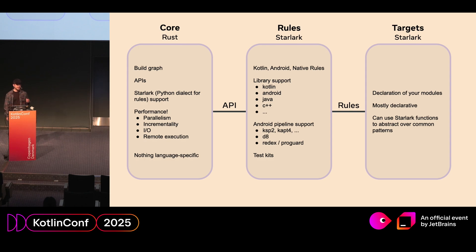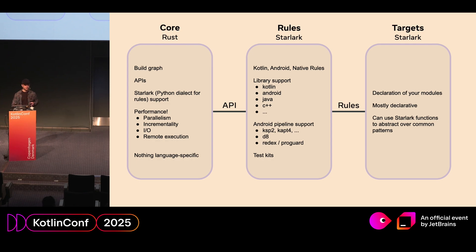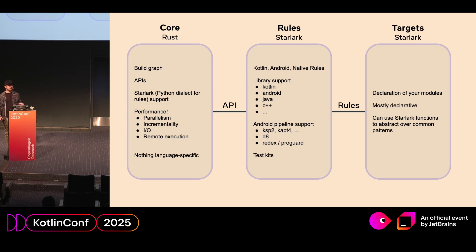Then there is the rule layer. The rule layer is where we define how we build things in the ecosystem — toolchains and things like that. This is where compilers are integrated and where we define how we interact with KAPT, KSP, any bytecode optimizers like R8, ProGuard, Redex, dexers, and bytecode translation. In the rule layer you can be as creative as you want, delivering your rules to everyone in the company or a subset of targets.